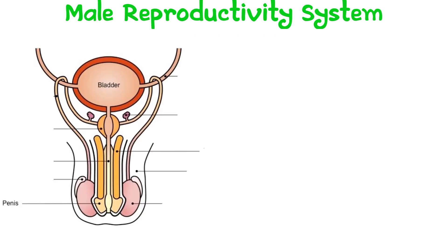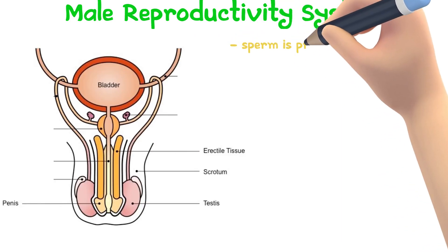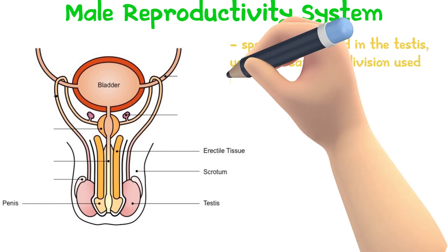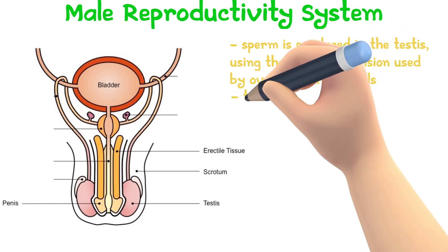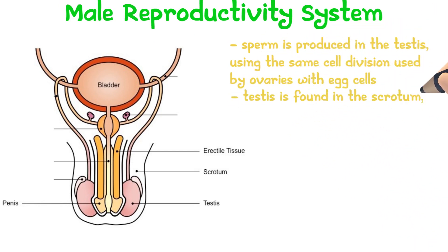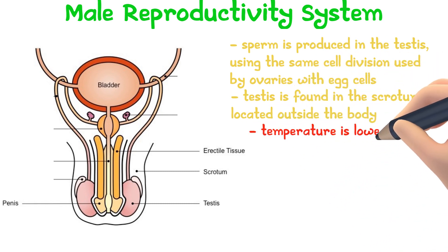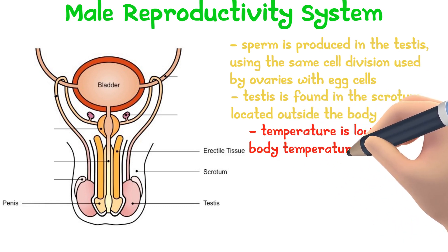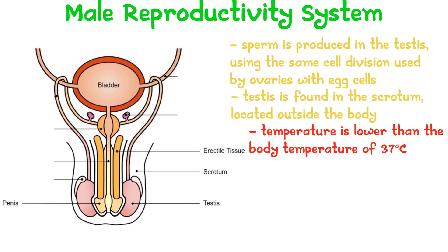This is the male reproductive system. Sperm is produced by the testes by the same sort of cell division used to make the egg cell. The testes is found in the scrotum, which is located outside the body. This is because their temperature is lower than the body temperature of 37 degrees Celsius. The lower temperature is ideal for sperm production.